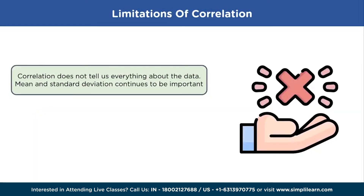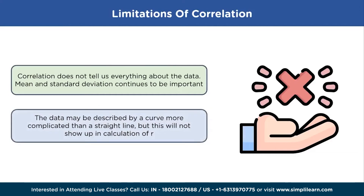There are also some limitations of correlation. First, correlation does not give you every insight on the data — mean and standard deviation are still important parameters to get insight from data. Second, the data will not produce a straight line every time, and it will be difficult to predict the value of r just from the straight line or slope of the graph.